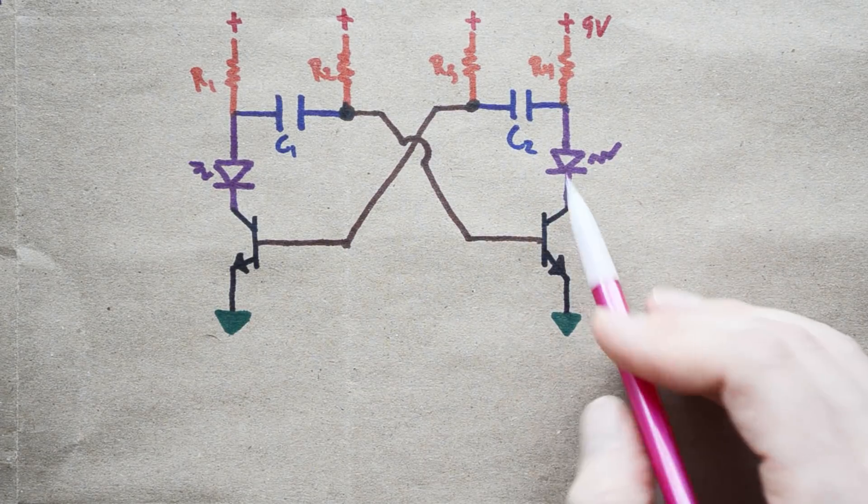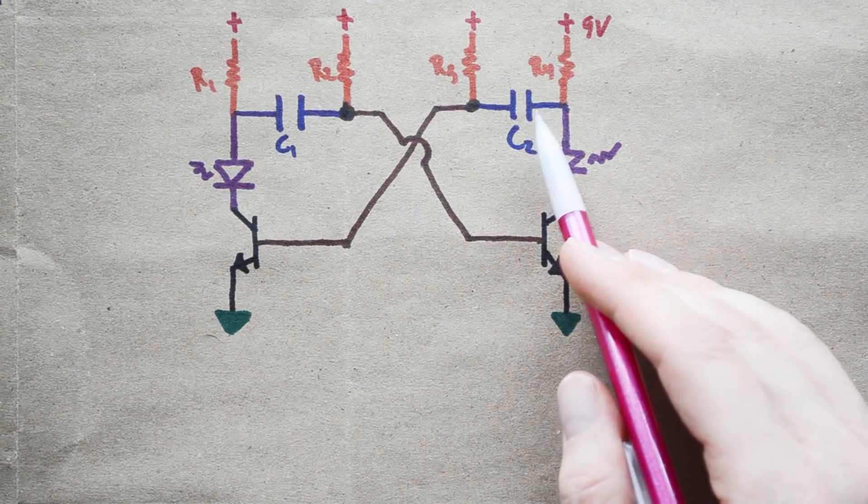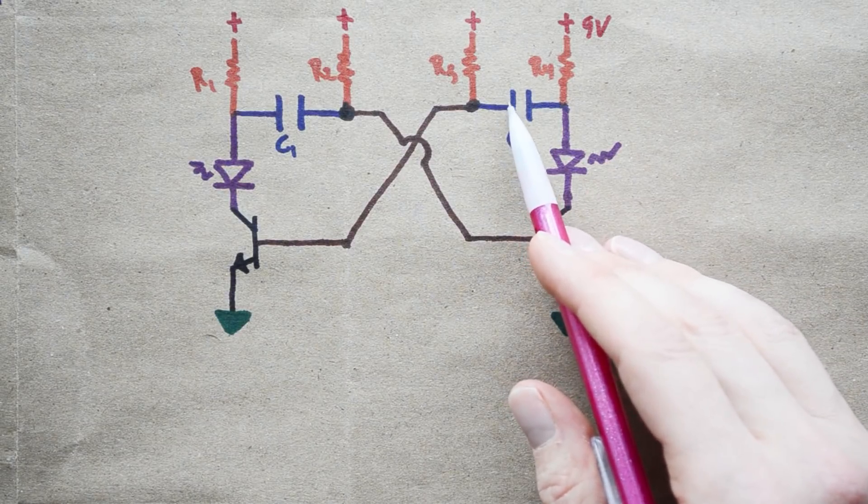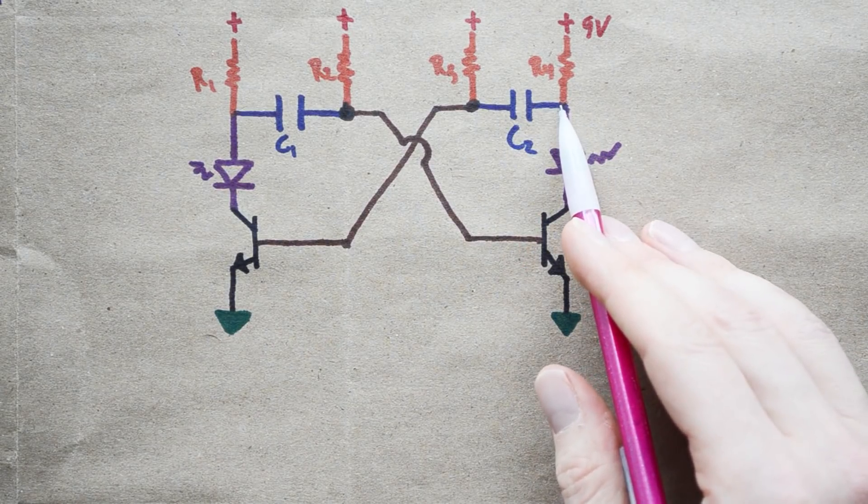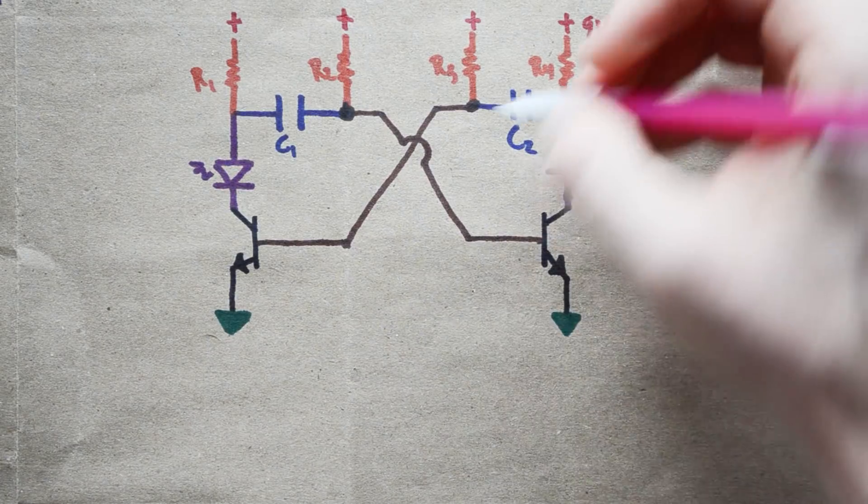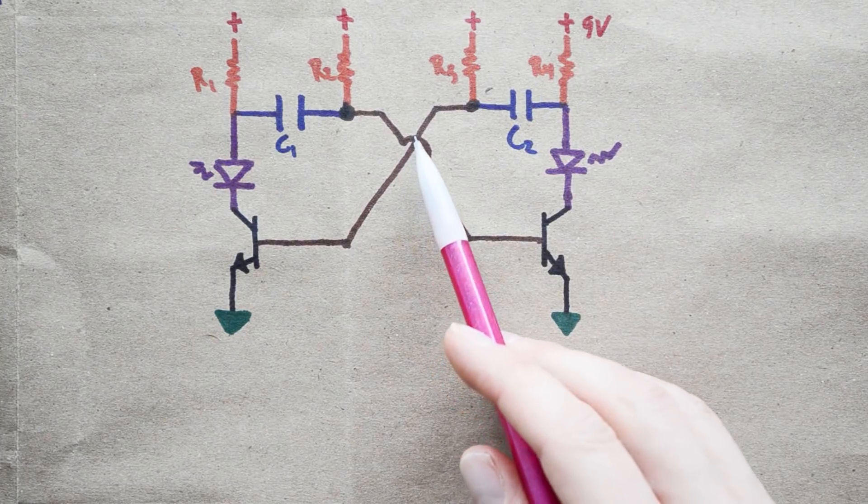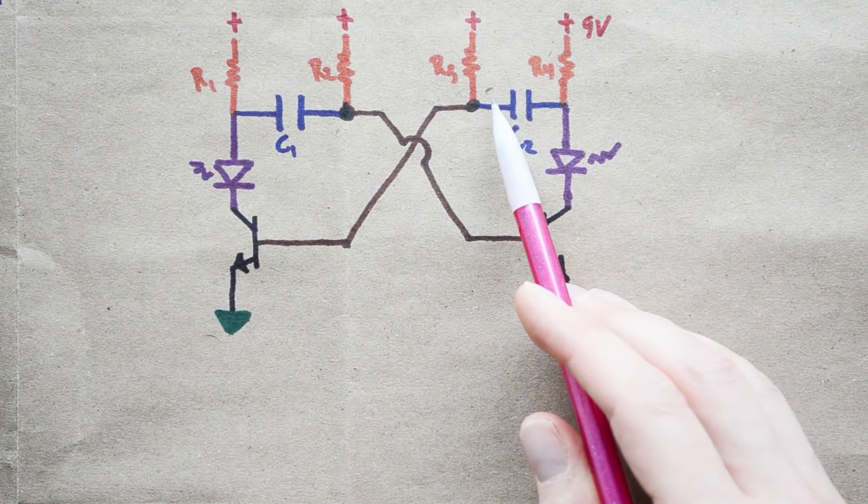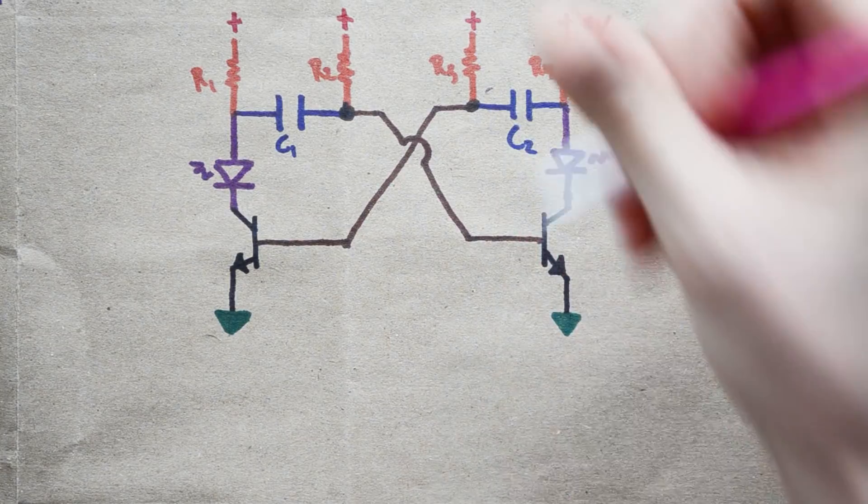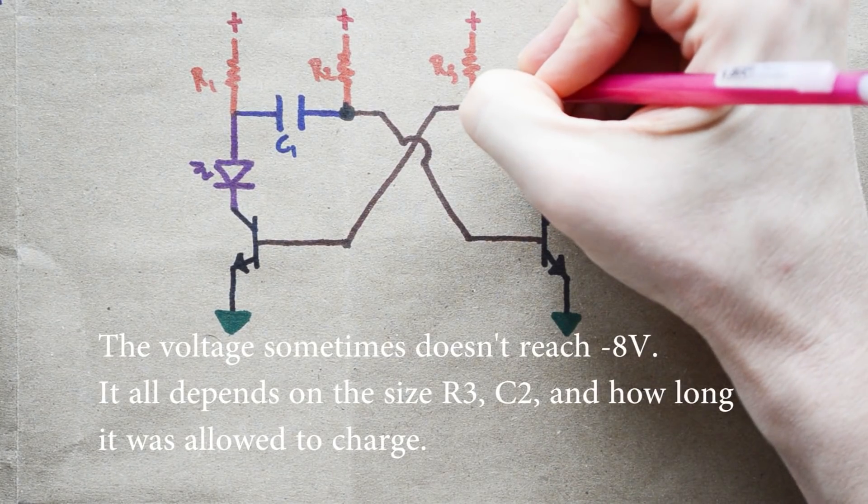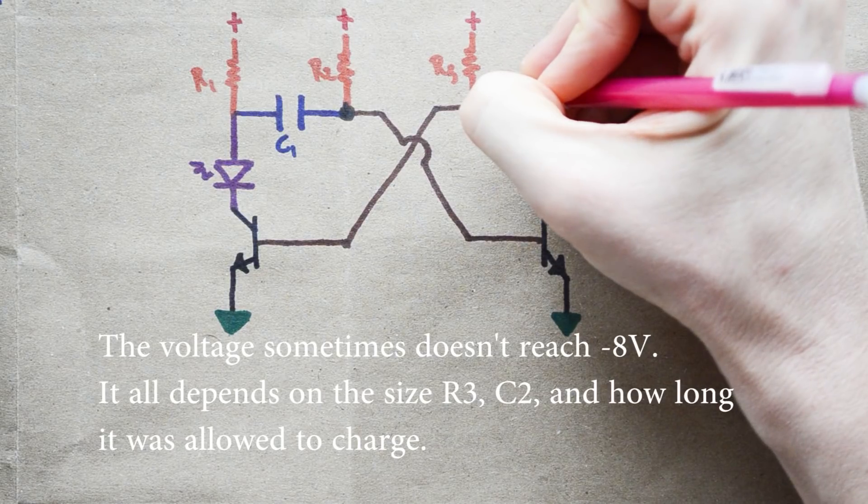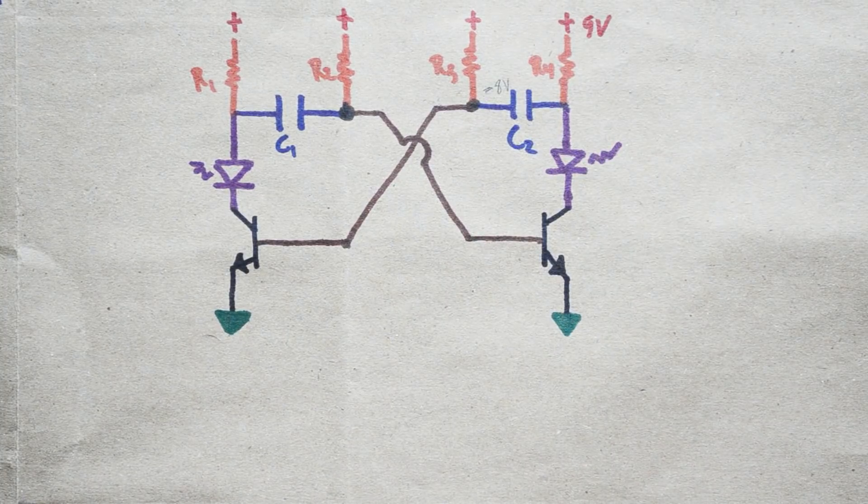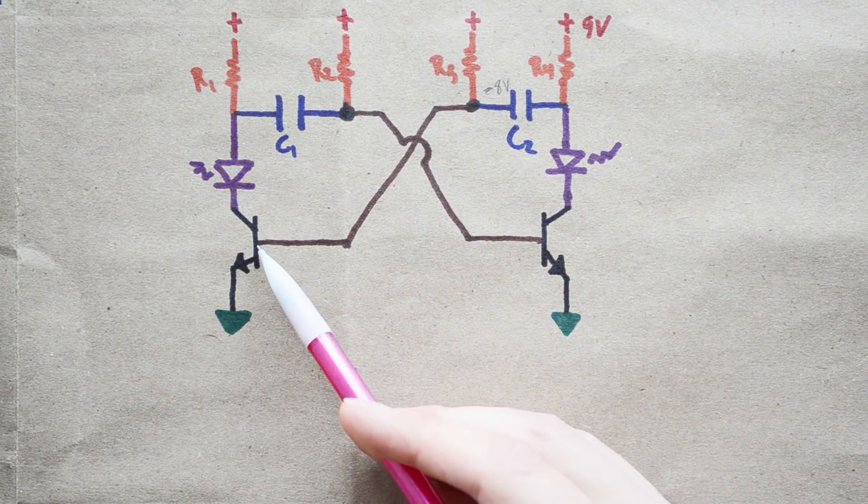As soon as this goes to ground, what happens is you change the reference point for this capacitor. So, where there was 9 volts over here and 0.95 over here, now you've given this a ground and you're going to end up with a negative voltage on this side. So, what happens is that this transistor all of a sudden is going from seeing a voltage of 0.95 volts to seeing a voltage of negative 8 volts on this side. Or somewhere around in that region. Because of that, this transistor immediately shuts off.